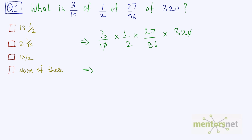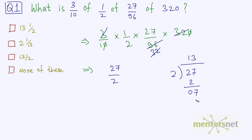This 0 gets cancelled out. Then 3 times 1 is 3, 3 times 3 is 9, and 3 times 2 is 6. And this 32 and this 32 get cancelled out. So what remains is 27 divided by 2. There is nothing like 27 divided by 2 in the options, so we have to evaluate this into a mixed fraction. Dividing 27 by 2 gives 13 and 1/2. So the answer is option 1.